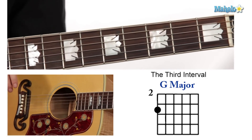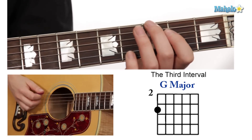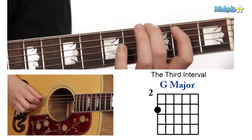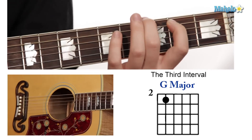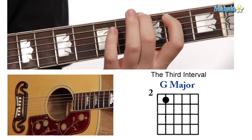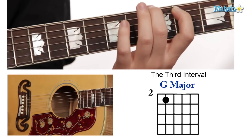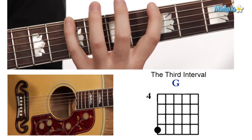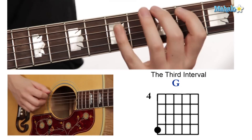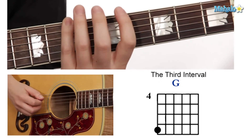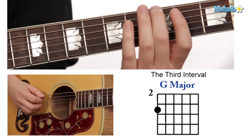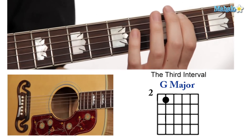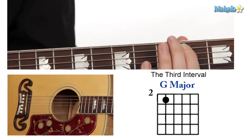Starting on G, a major third is this — from G to B — made up of two whole steps. G to B, playing on the sixth string and the sixth and fifth string to show off.